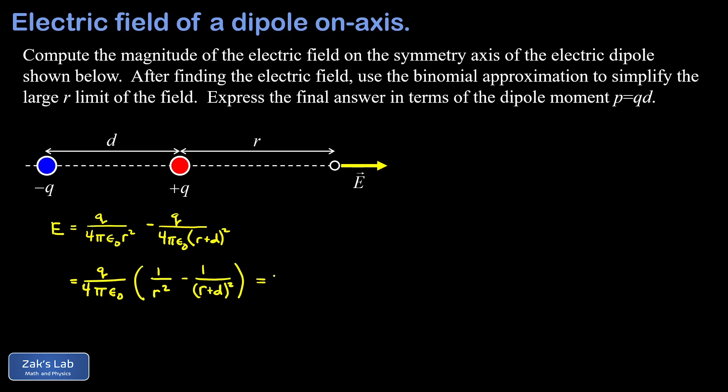One thing I'm going to do before I get into the binomial approximation is I want to factor an r squared out of the denominators in those parentheses, and what's left in the parentheses then is a one minus, and then dividing an r squared out of the denominator in our second term here, we end up with a one plus d over r quantity squared. So there's our total electric field at the observation point, and we've isolated this term out in front that looks very much like the field of a point charge, and then it's multiplied by this term in parentheses that's modifying it, and that's the part we want to try to understand better in the large r approximation.